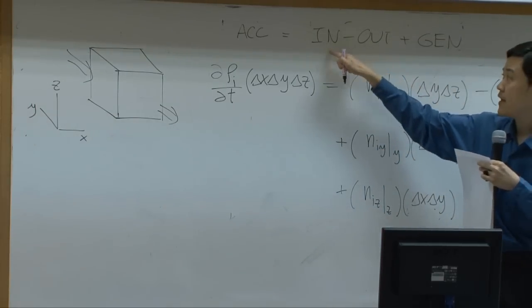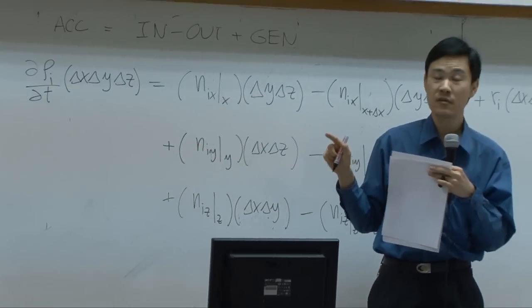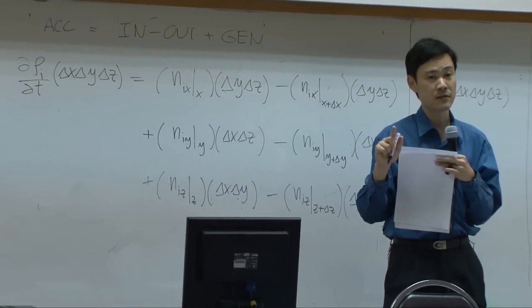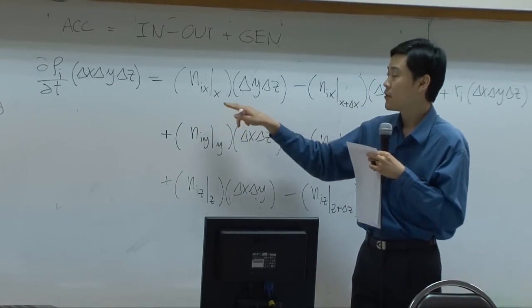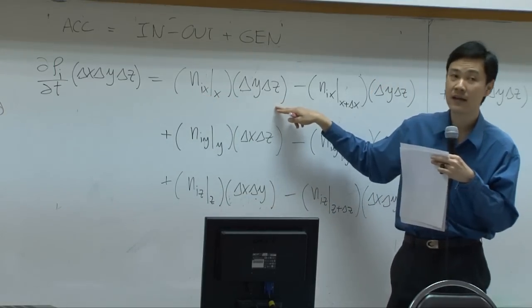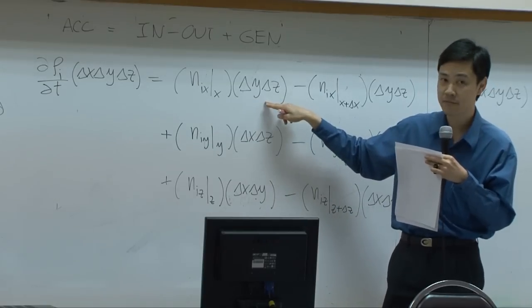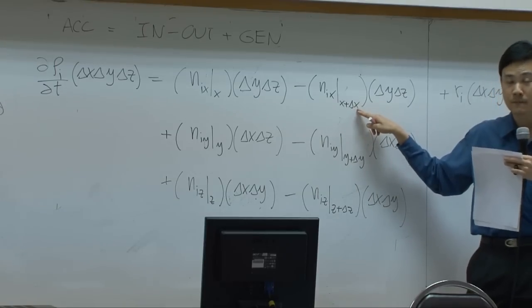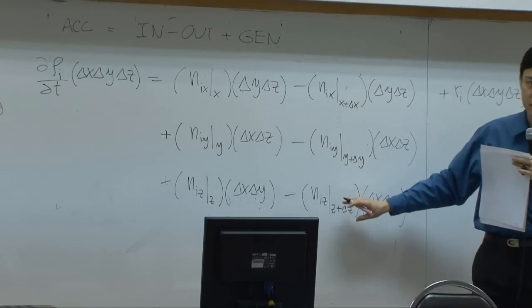Then there will be in and out. In and out here would be net transport in and out to the shell. The net transport will be represented by using combined flux. We have two kinds of flux: diffusion flux and convective flux. Once you combine them together, you get combined mass flux of species i going in x direction multiplied by the area perpendicular to it. The output will be the same except that the location will be changed to x plus delta x. You repeat this for x, y, and z direction. You end up with six terms, in and out.